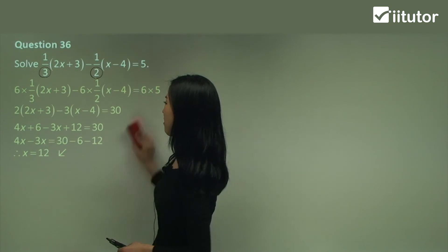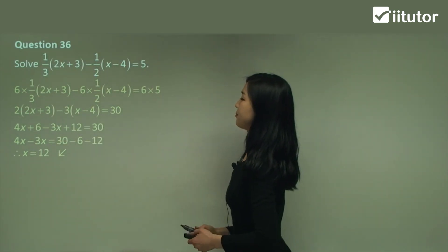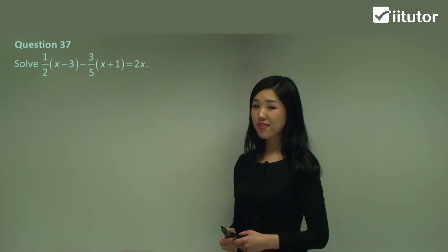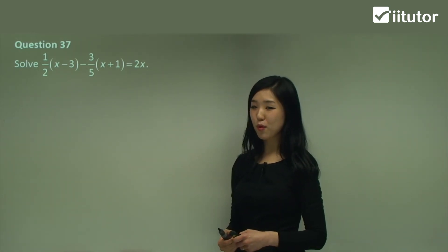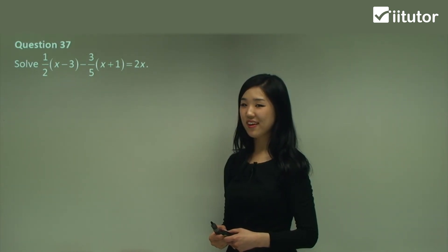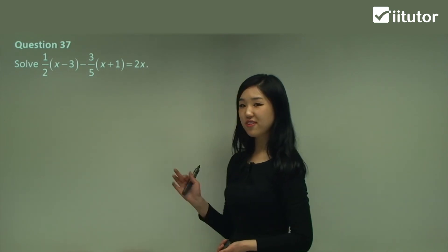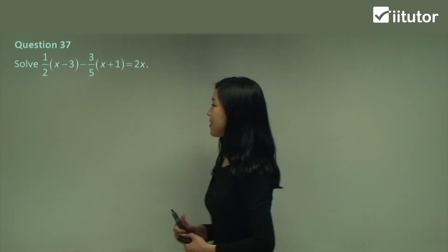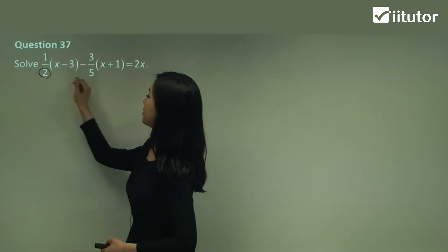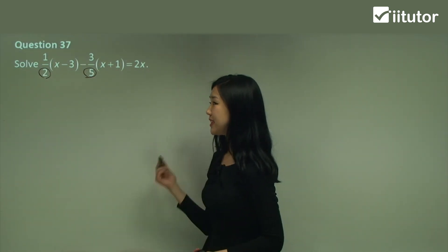It's very repetitive, isn't it? Question 37. If you can, pause for a moment and try it yourself, then check your answers and see if you get the same answer. The rest of you can watch. What are the denominators? They're 2 and 5. And what's the lowest common multiple? It's 10. So multiply everything by 10 as we always do.